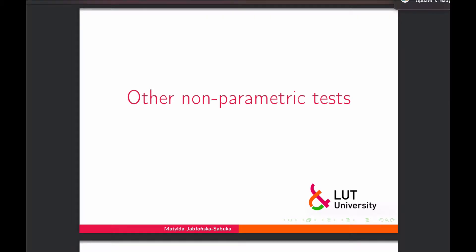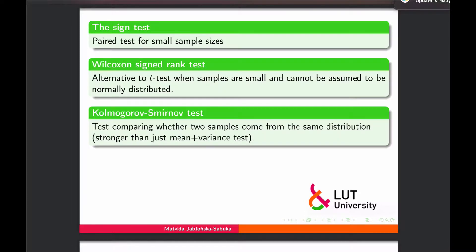The last part of this week's material goes briefly through other non-parametric tests, so that you know which tests are appropriate when your data is not normal. We have the sign test, which is suitable as a paired test for small sample sizes. The rule of thumb minimum is at least 10 observations when comparing two samples — even more than 20 is better — but 10 is like an absolute minimum for parametric tests. So in case you have a paired test with a small sample size, you should use the sign test.